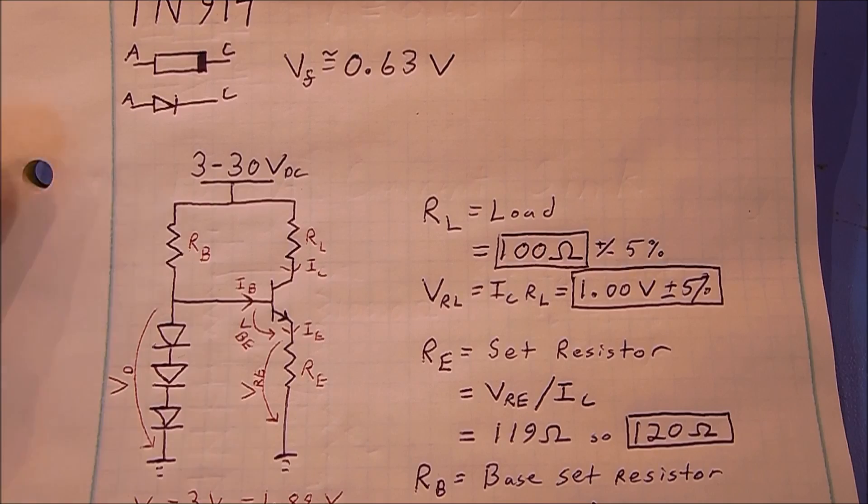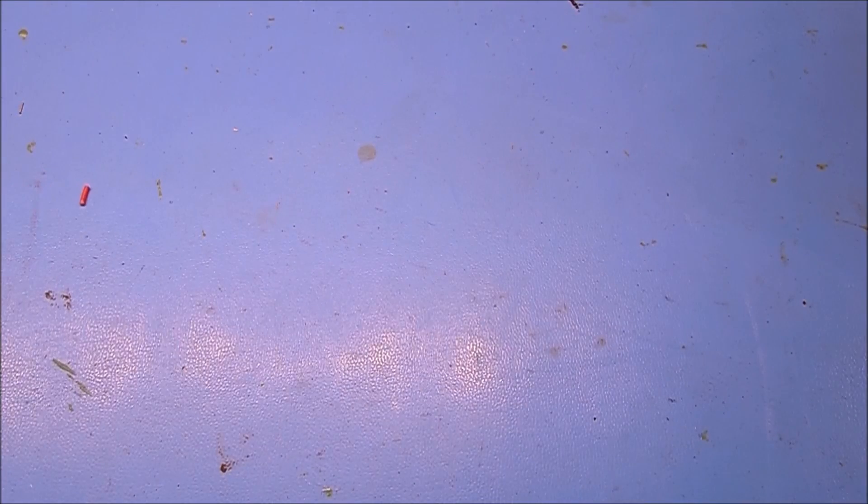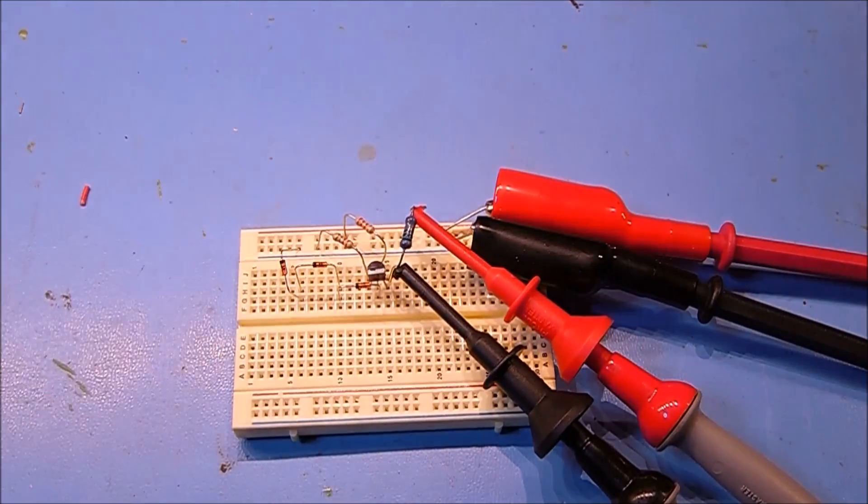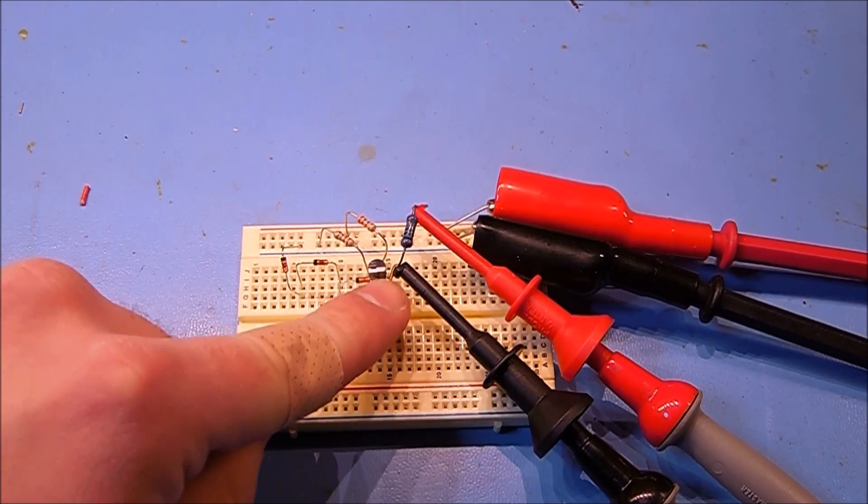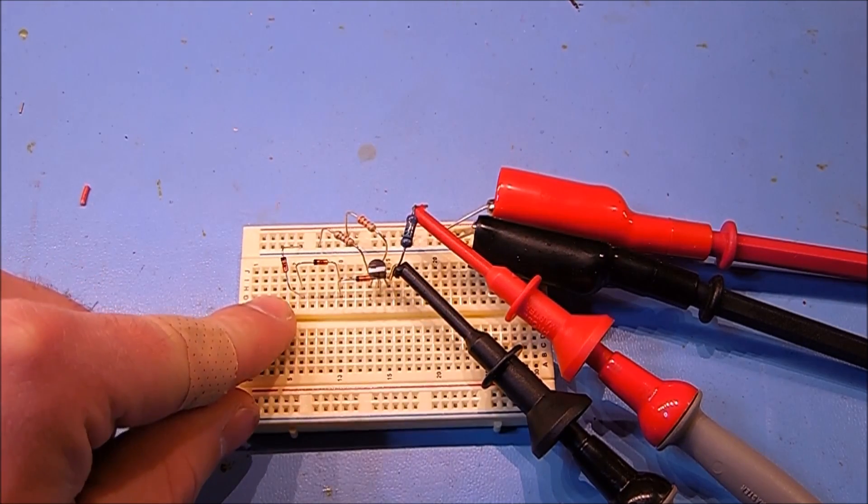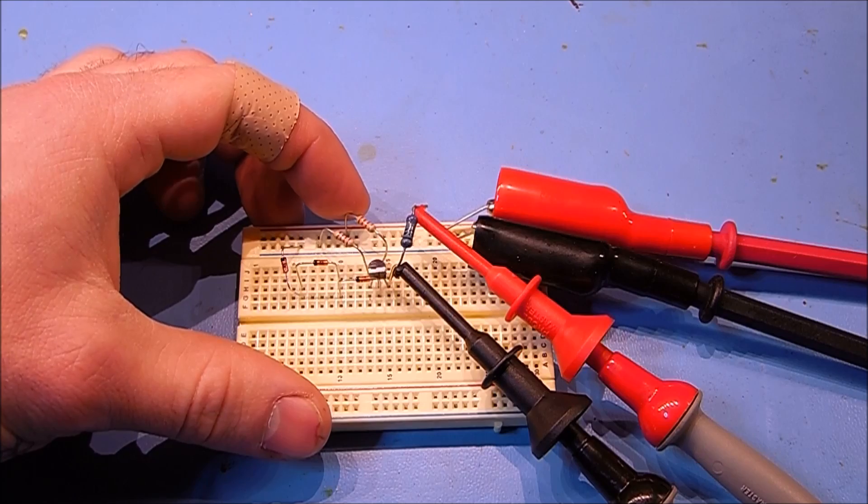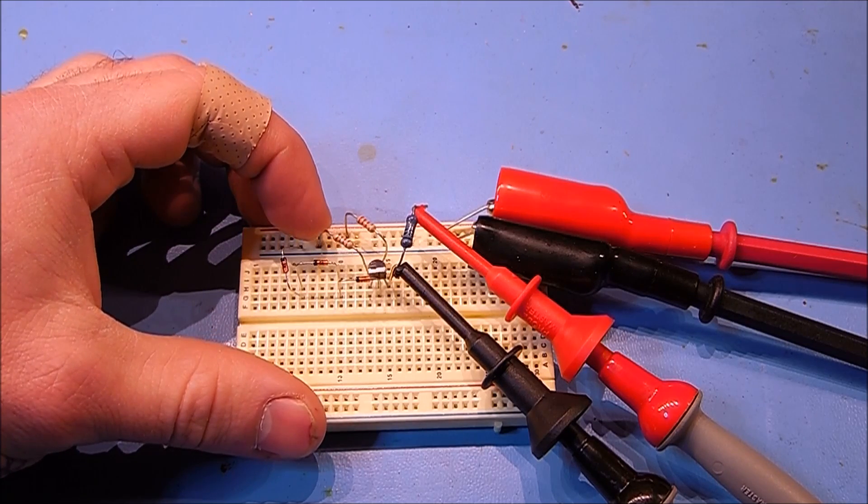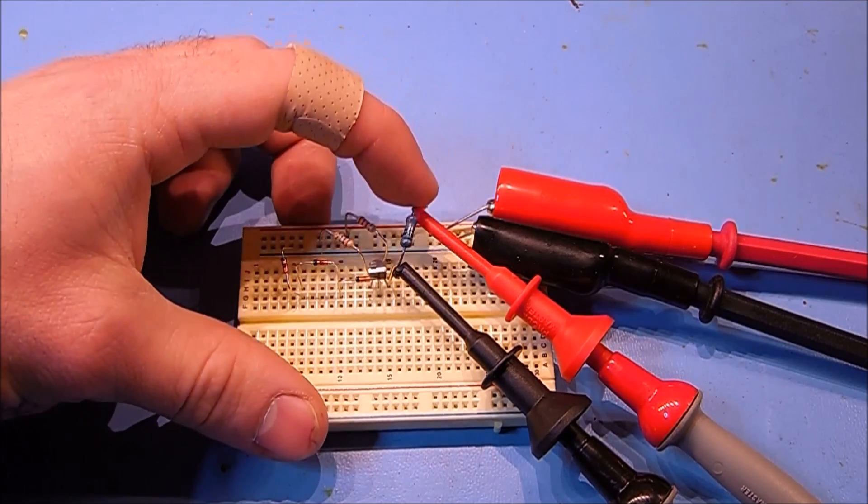Now we know all of our values. Let's go over to the actual circuit. Here we have our single NPN transistor, our three diodes, our 2.2k resistor, our 120 ohm resistor, and our 100 ohm resistor.